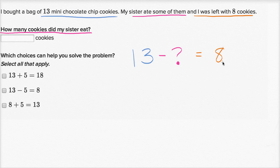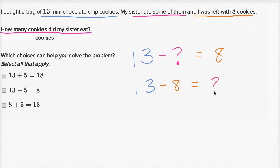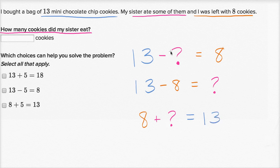So 13 minus something is equal to eight. You could say: I know 13 minus five is equal to eight, so the question mark is equal to five. Or you could say 13 minus eight is equal to the question mark. Or you could say: if I was left with eight cookies and my sister ate some, then eight plus what she ate must equal how many I originally had — 13. Any way you do it, the question mark is equal to five. My sister ate five cookies.